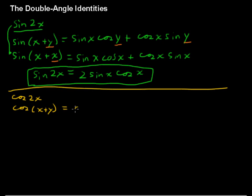I'll run through the same thing that I did up here in the green. Cosine of x plus y equals cos of x, cos of y minus sin of x, sin of y. Alright, so if I had cosine of x plus x,